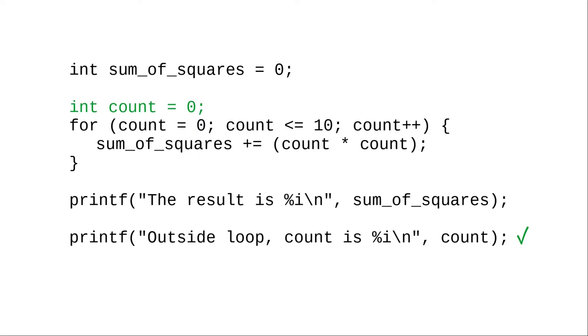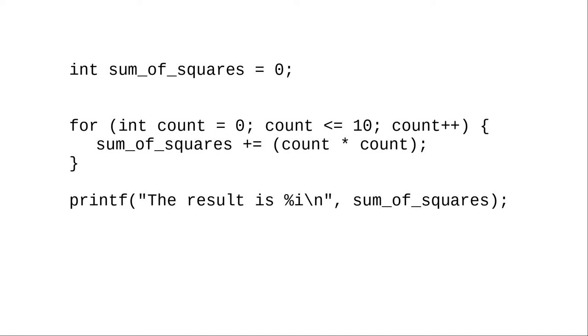Since you're initializing the variable outside the loop anyway, you can leave out the initialization step of the for specification, but you must keep the semicolon there. However, this is not a style that I would encourage. Instead, you'll usually declare the loop variable in the initialization step.